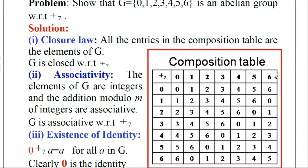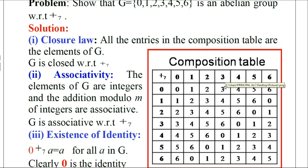This is called the topmost row. Consider the first row headed by 0. We add: 0+0=0, 0+1=1, 0+2=2. When we say plus, it means addition modulo 7. 0+3=3, 0+4=4, 0+5=5, 0+6=6.